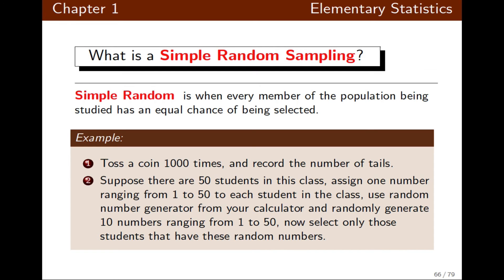For example, if you toss a coin 1000 times and record the number of tails, that is considered simple random sampling. Similarly, if you assign numbers one to fifty to fifty different students and then select any one of those numbers, each had an equal chance of being selected — that is simple random sampling.